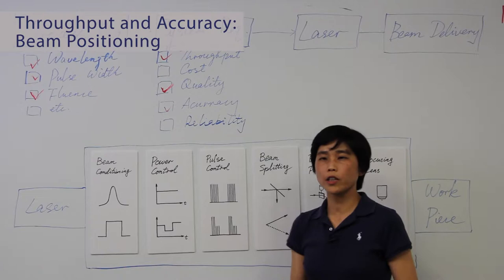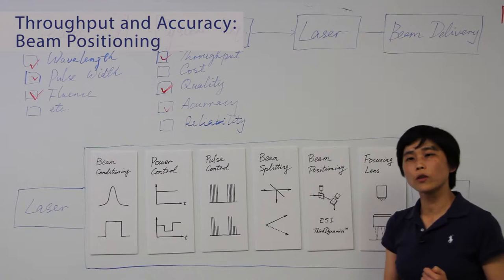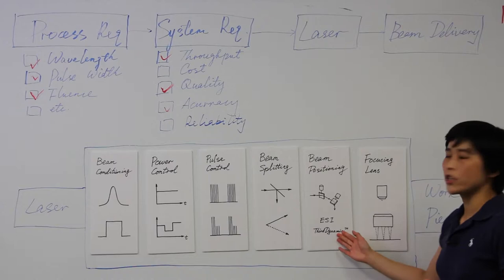ESI has the patented tertiary beam positioning technology. It gives us the third level of control. We can place the photon to the work in a much faster and accurate way. This technology has been used in multiple lines of product at ESI.